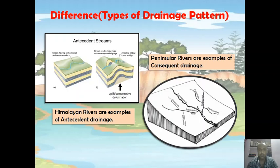Now why do we call Peninsular rivers an example of consequent drainage? Because Peninsular rivers follow the general slope of the land. Most Peninsular rivers, except Narmada and Tapi, follow the general slope of the land from west to east.